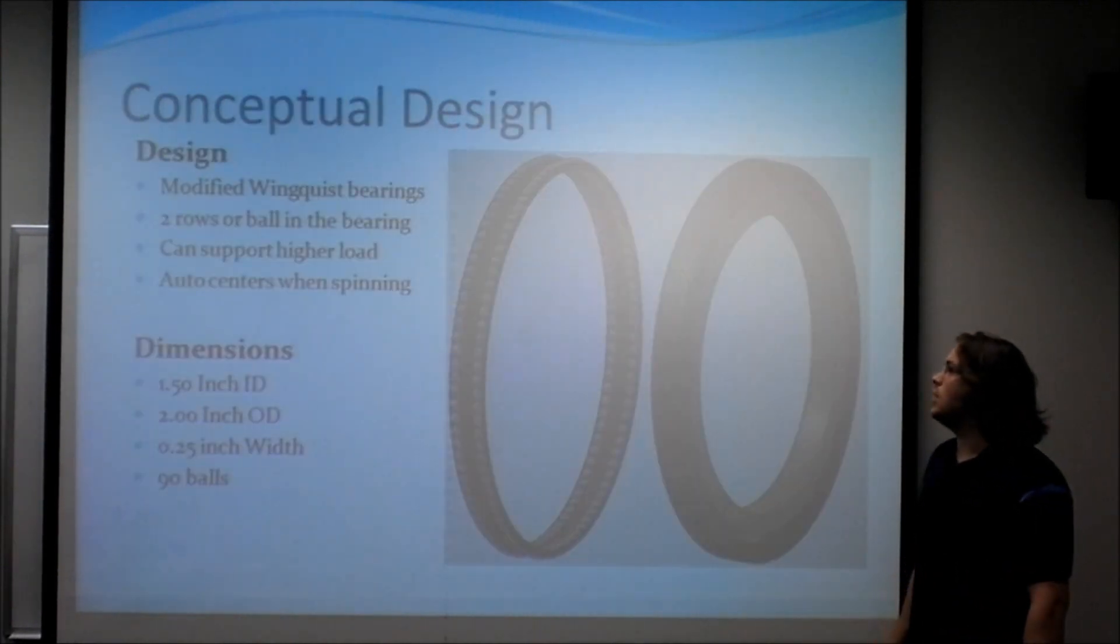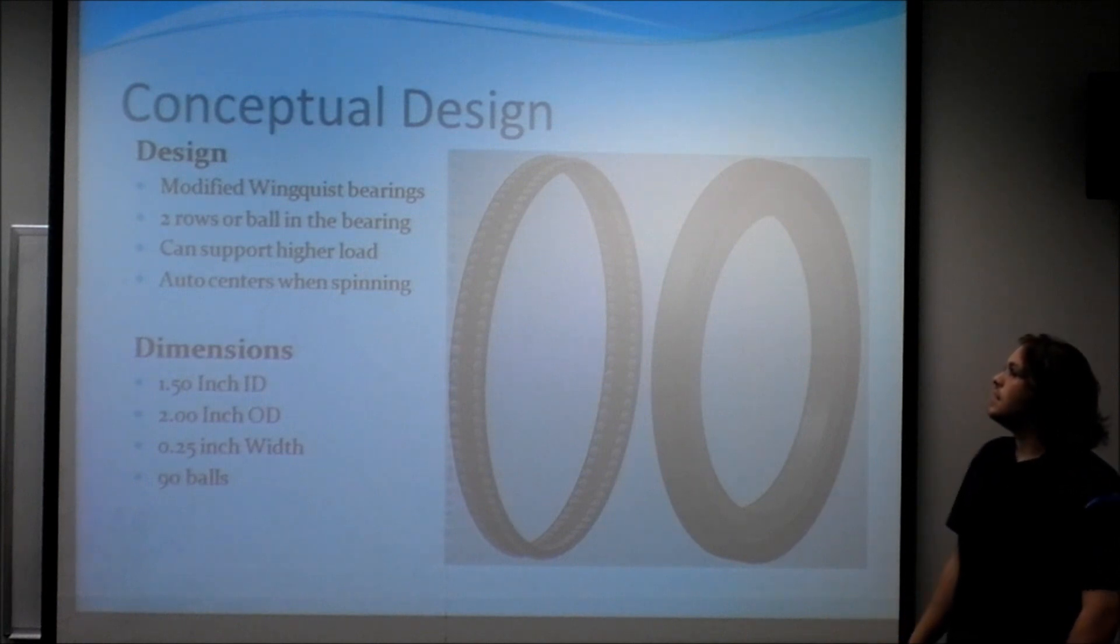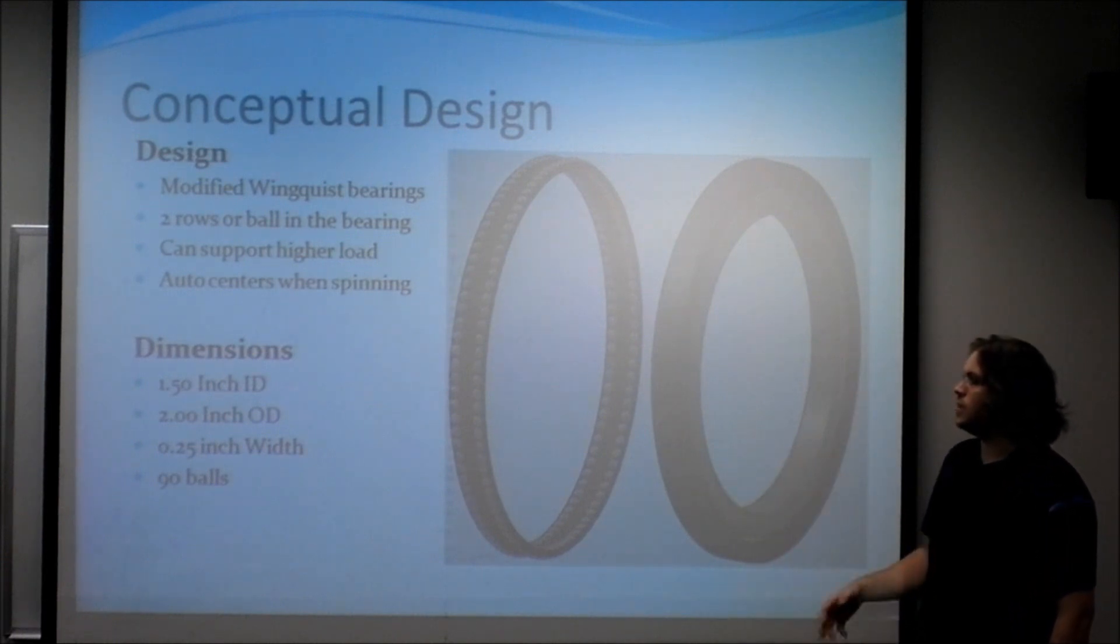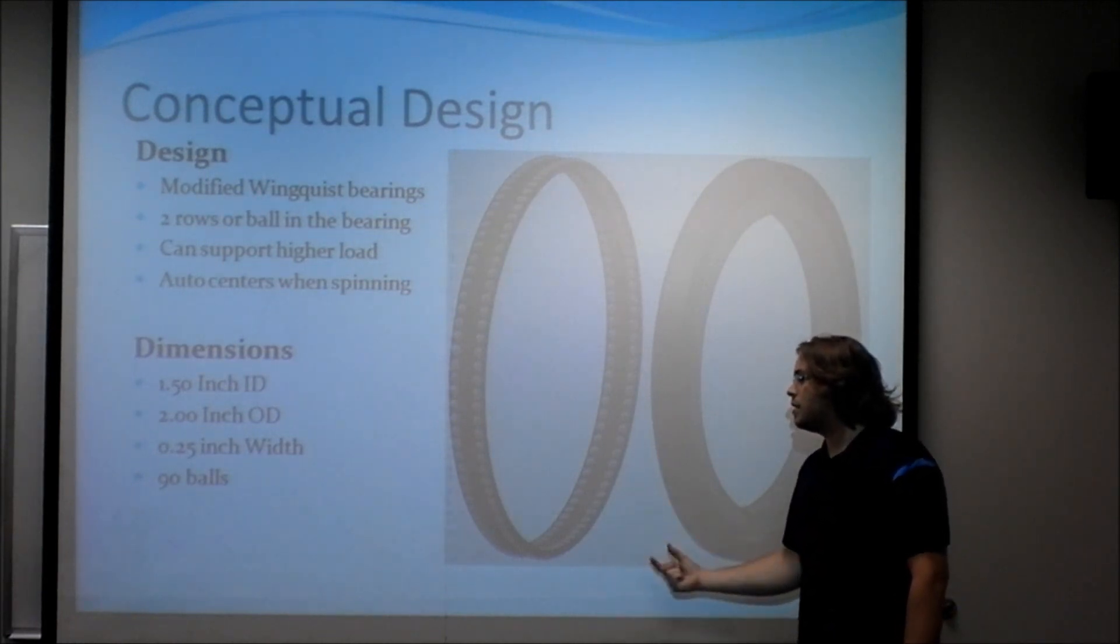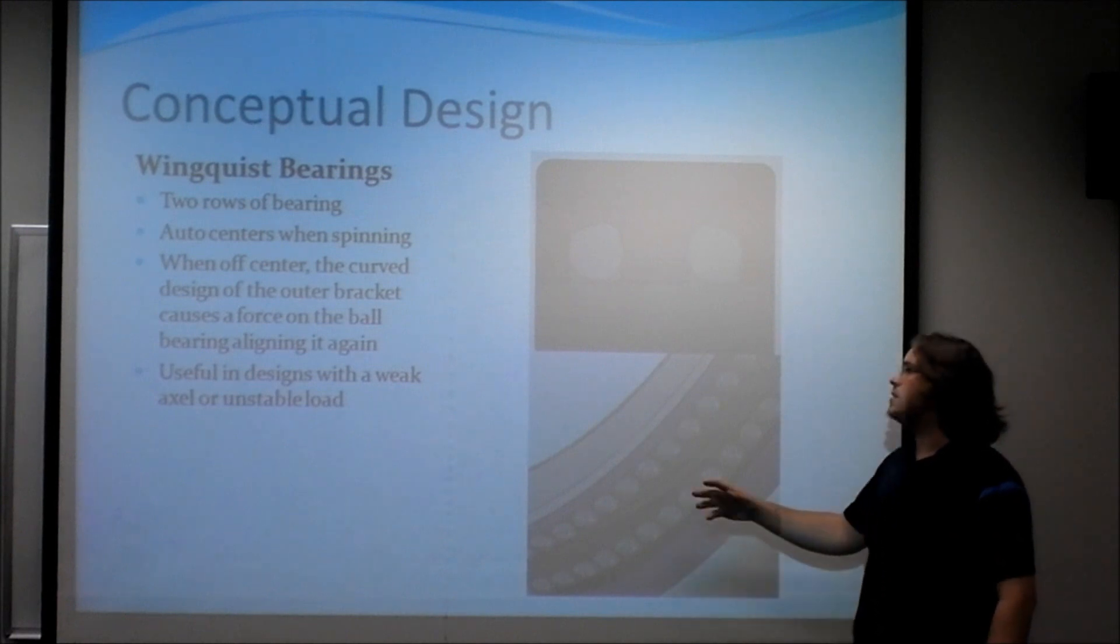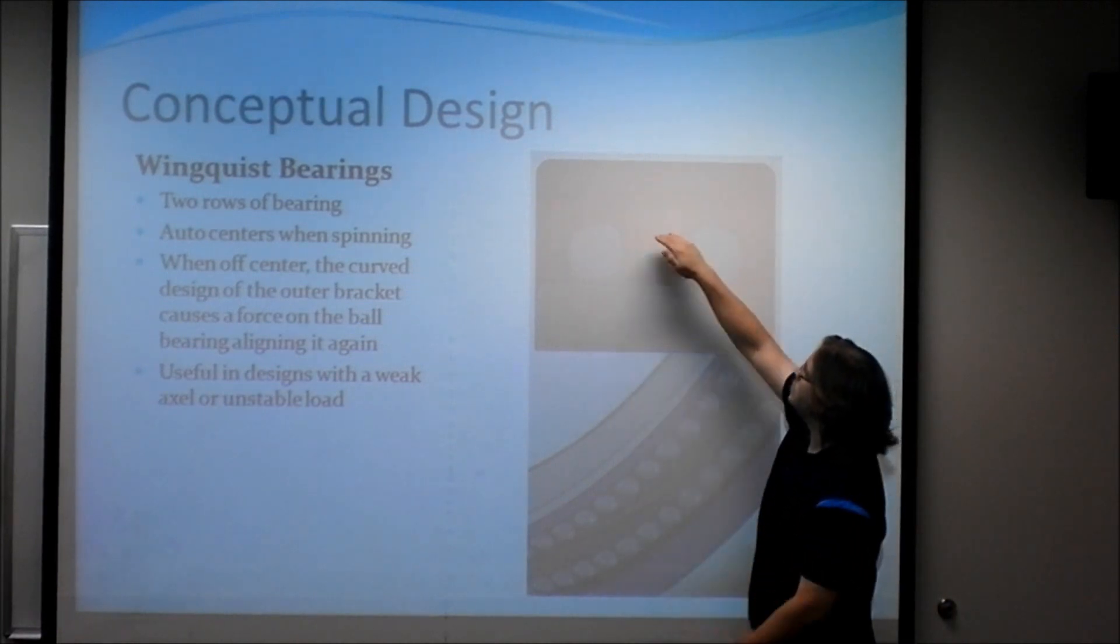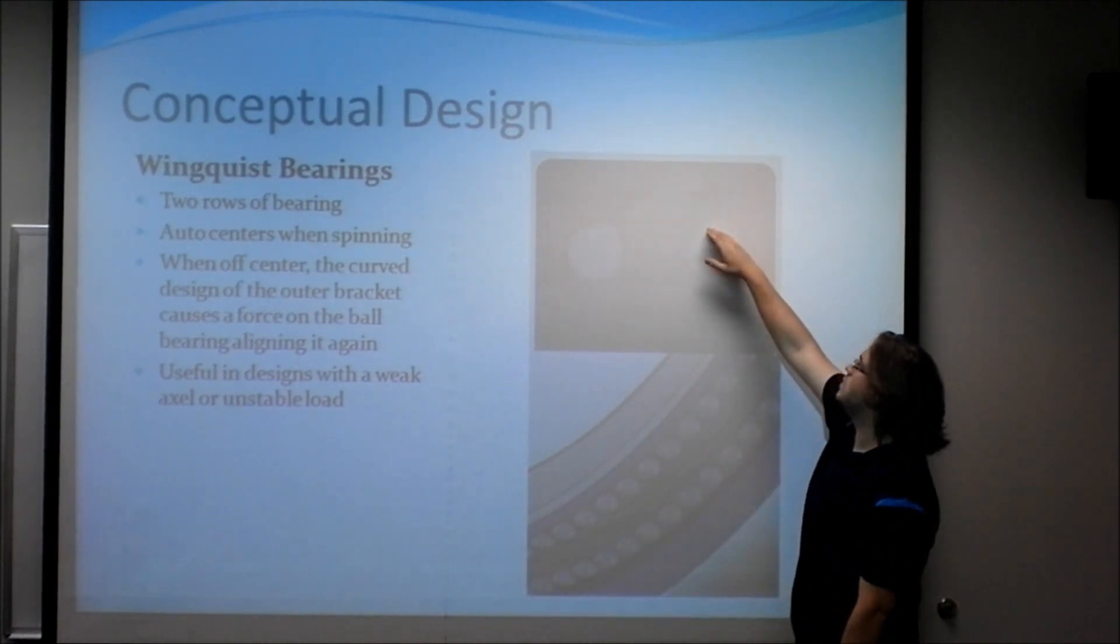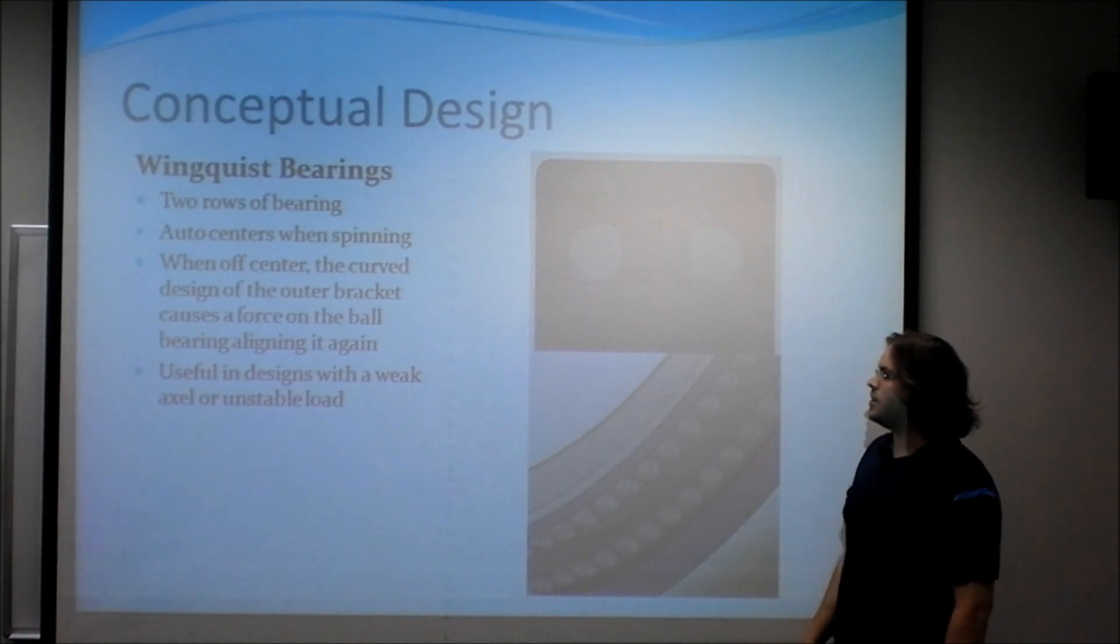This is a conceptual design. We did a WinQuest bearing. The special part about this bearing is that it has two rows of ball bearings, and the objective is for it to support more weight and also it centers itself. It auto centers itself in what it's fitting. The one that we designed here has a 1.5 inch inner diameter, 2 inch outer diameter, 1.5 inch thick, and has 90 ball bearings in each row, so it's a total of 180. And the way that it actually works is that there's a small curvature in the inside of the bearing, and when the balls are running straight, they run on the flat section when everything is lined up. When it gets out of alignment, the ball will run onto the curved surface and cause a normal force to push it back in. This design is primarily a very special application.